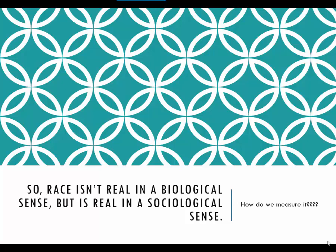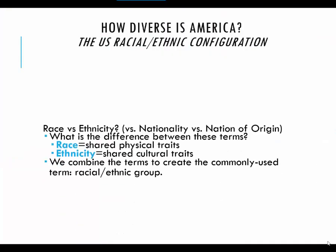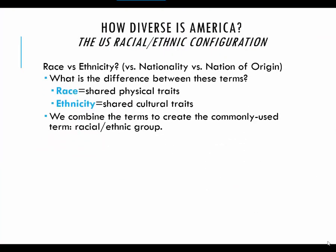As we start thinking about how we measure race, going all the way back to chapter one and the concept of operational definitions — we have to know it when we see it in the field. Let me begin by clarifying four concepts: two of which are very important for this chapter — race and ethnicity — and two of which are less important but sometimes come up when people are talking about race and ethnicity, which is nationality and nation of origin. So let's begin by clarifying: what do we mean by race?